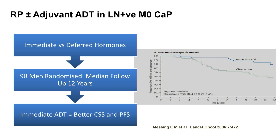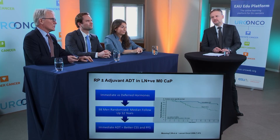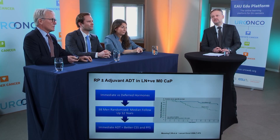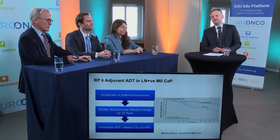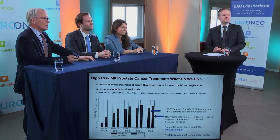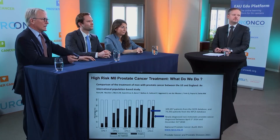The only real randomised trial we have is the Messing trial — very famous, very well done, ahead of its time. But with only 98 men randomised, it is really underpowered to reach any conclusion. Notwithstanding that, this is what happens on the international circuit.